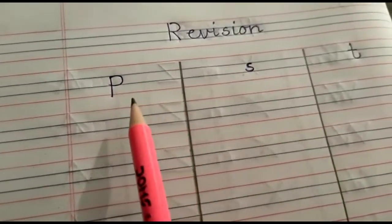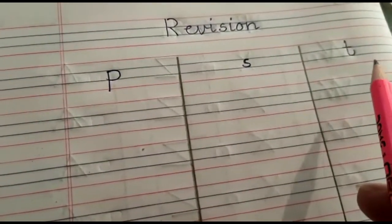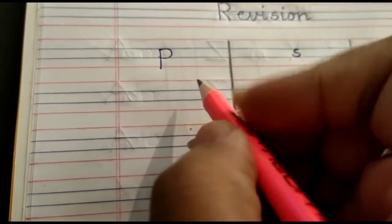So children, now it is home fun time. In your English notebook, your page is set like this. Now we are going to write small P, small S, and small T. So come on, let's start by writing small P.